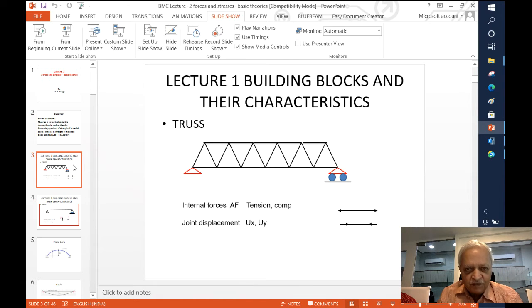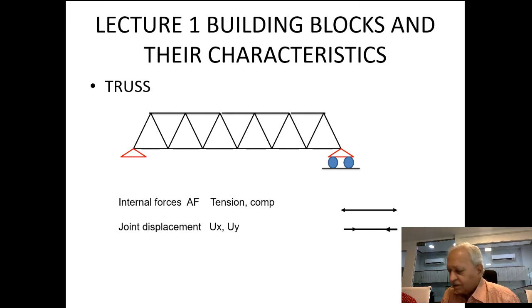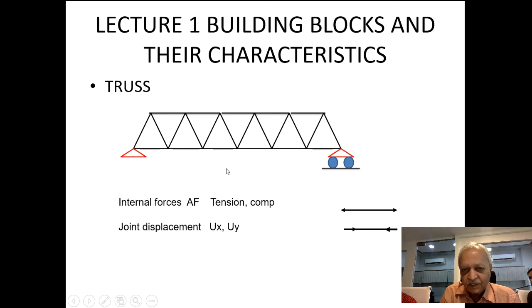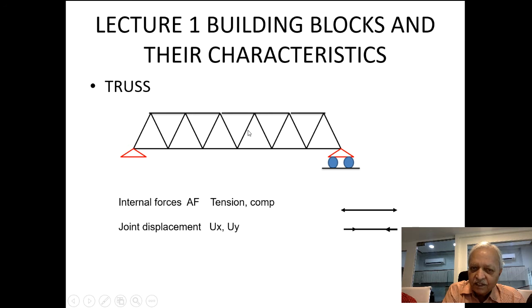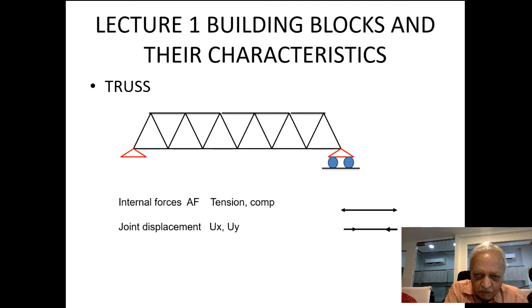In the last lecture we saw various building blocks of structures and how an engineer understands a structure. We identified a truss — once we say it is a truss, certain characteristics are presumed: all joints are connected by pin, loads are applied only at joints so internal forces are only axial (tension or compression), and displacements at any point are only in x and y directions.